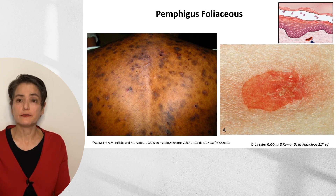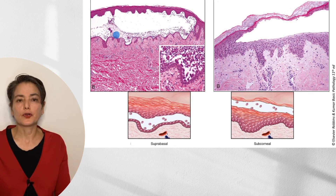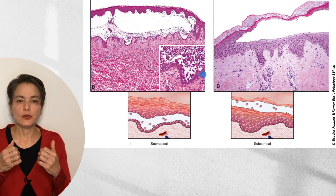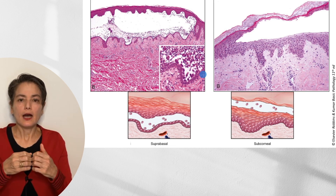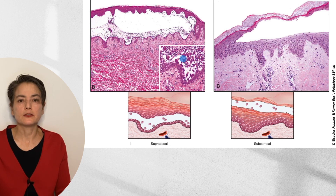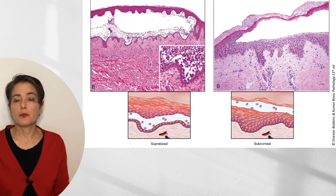Looking at the histology of these two: here we have a beautiful cartoon alongside the histology — test yourself which is which. This is pemphigus vulgaris with our suprabasal blister; you can see the basal cells are still attached, and in the inset they're rounding up. The desmosomes have broken down because of the autoantibody, causing inflammation. When that desmosome breaks apart, the cell rounds up to form what they call little tombstones. This is an acantholytic blister. By contrast, here is pemphigus foliaceous with our subcorneal blister — a beautiful shallow blister.